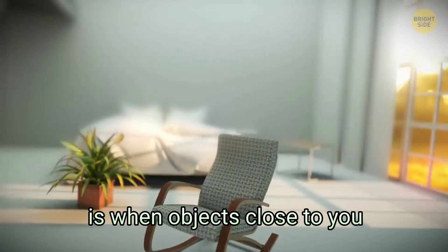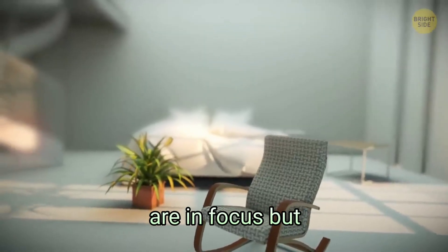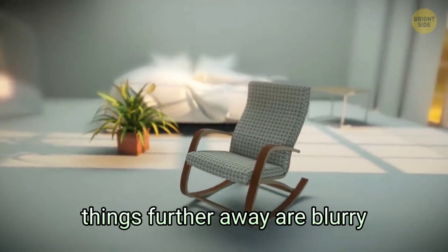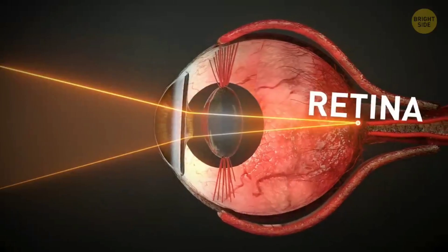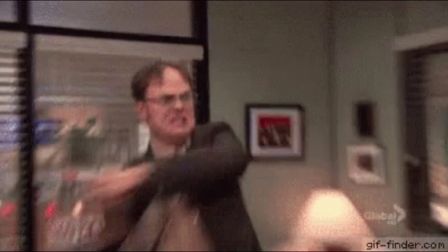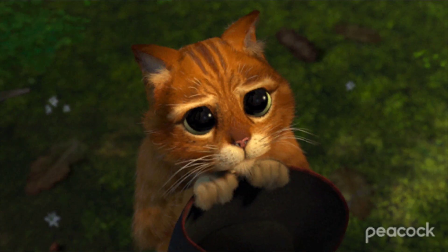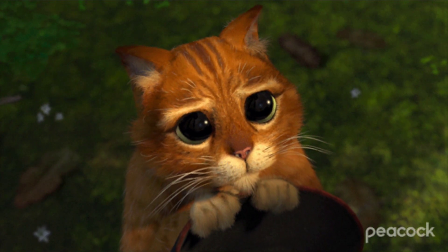Myopia, or nearsightedness, is when objects close to you are in focus but things further away are blurry. Here, I'll talk about why myopia occurs, what's really happening inside of your eyes, how to prevent your myopia from getting worse, and why your cat is super nearsighted.